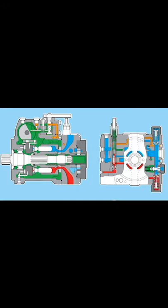Variable Displacement Pump A4VG for closed circuits — a variable displacement axial piston pump of swashplate design for hydrostatic closed circuit transmissions. Flow is proportional to drive speed and displacement, and is infinitely variable.